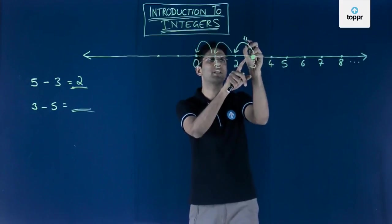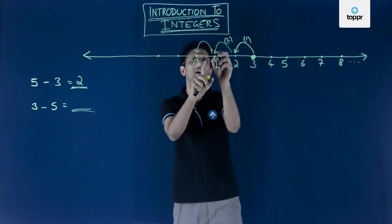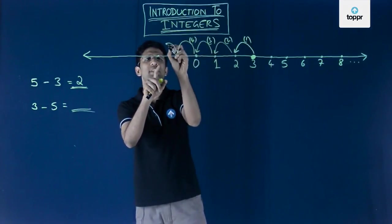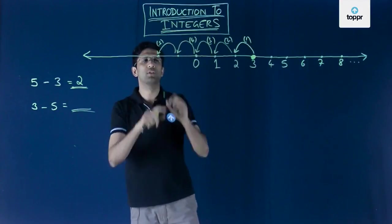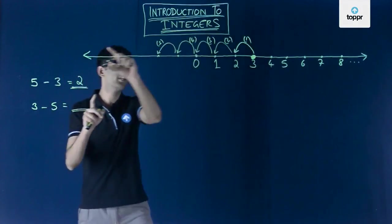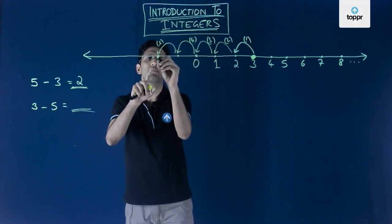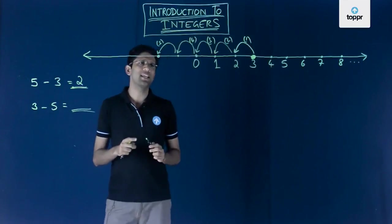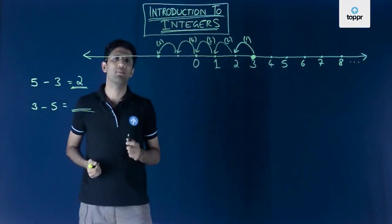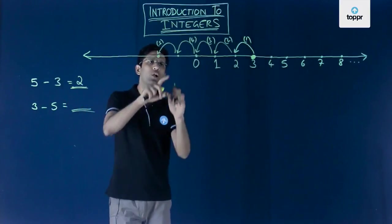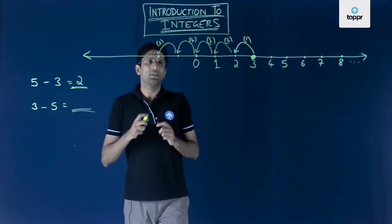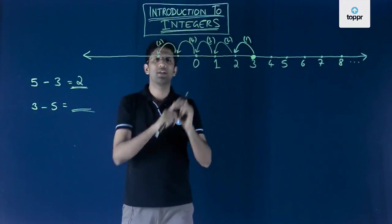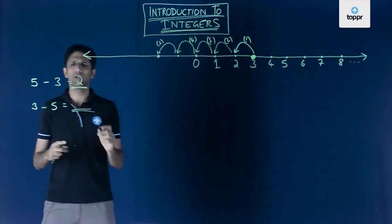The first jump from 3 was to 2, the second jump was from 2 to 1, the third jump was from 1 to 0, the fourth jump takes us past 0, and finally the fifth jump lands us at a new point. We have now done the operation 3 minus 5 on the number line, but we have reached a point we need a symbol to represent. Whenever we deal with numbers to the left of 0, we call such numbers negative numbers. Because we could not do 3 minus 5 with our regular set of whole and natural numbers, we need to invent new numbers — and these new numbers are called integers.